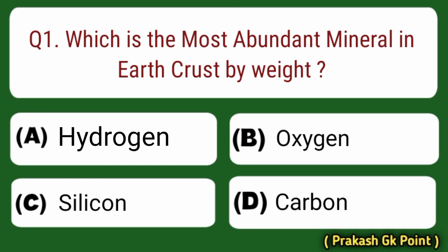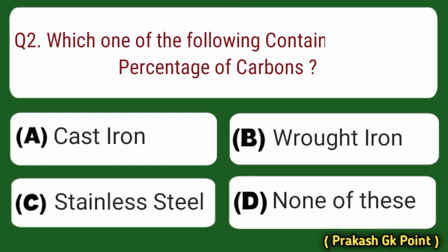First question: which is the most evident mineral in earth crossed by wheat? Answer: Option B — Oxygen.